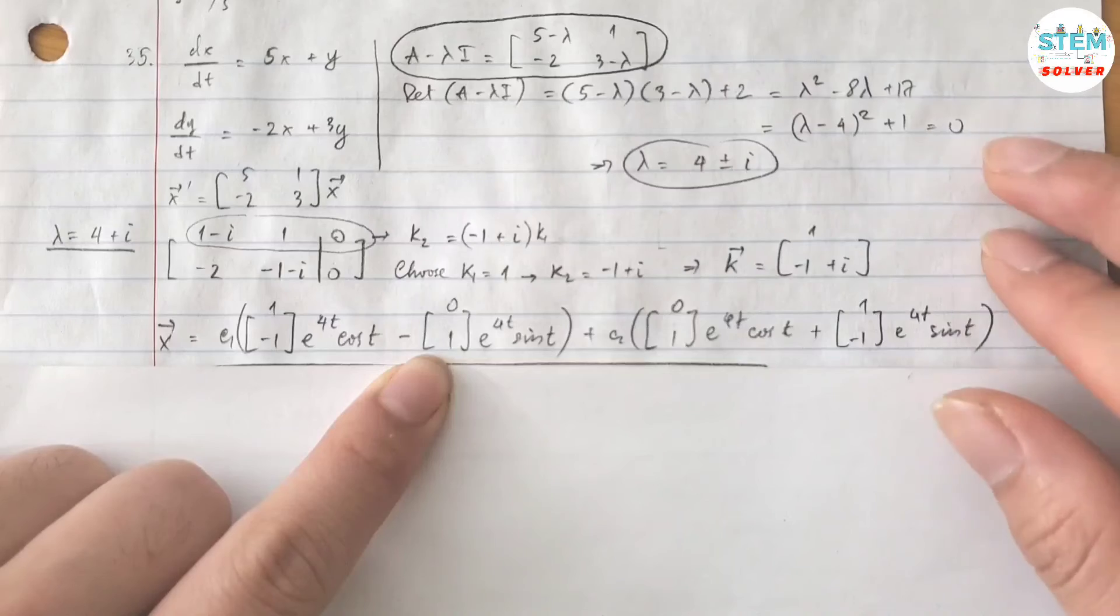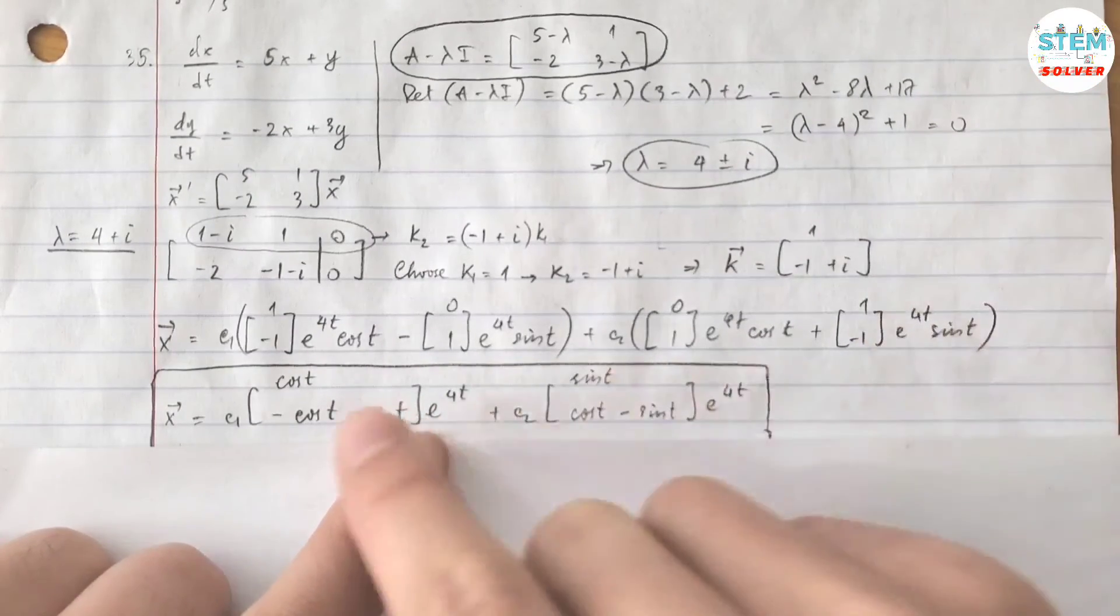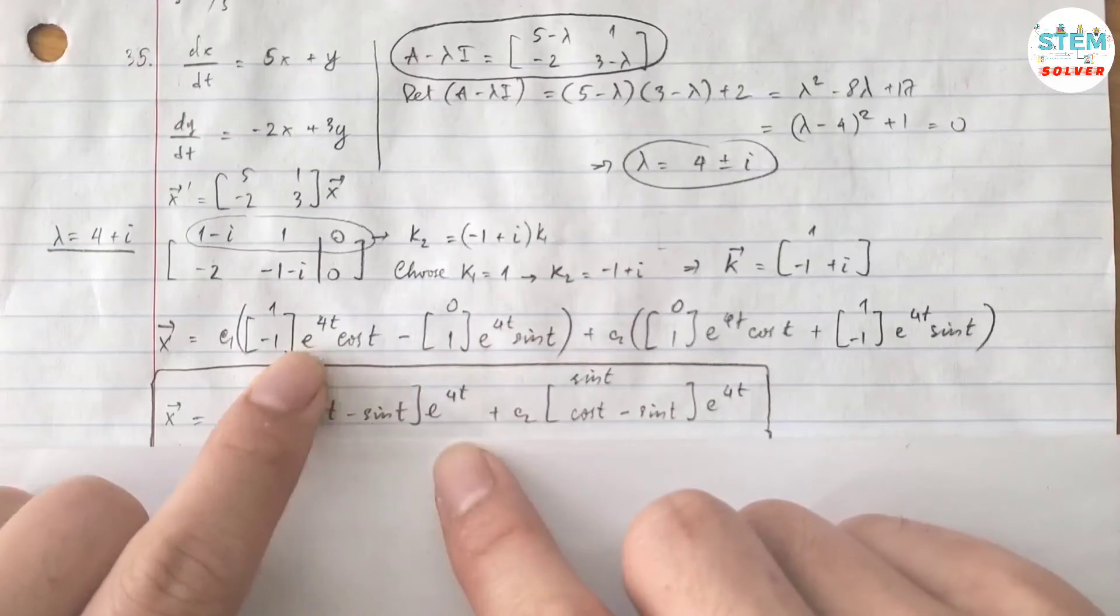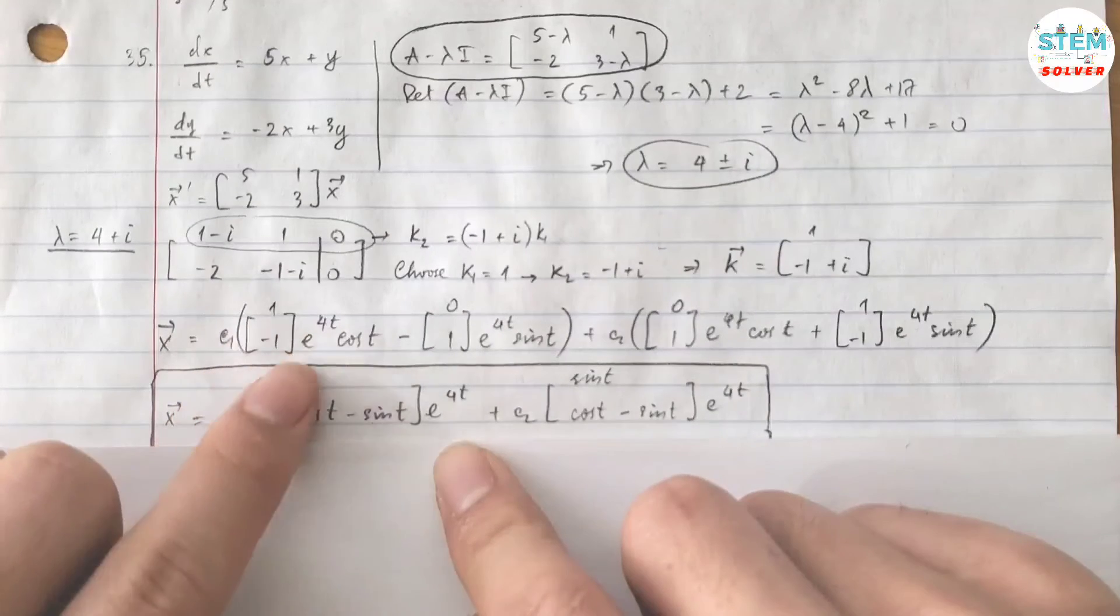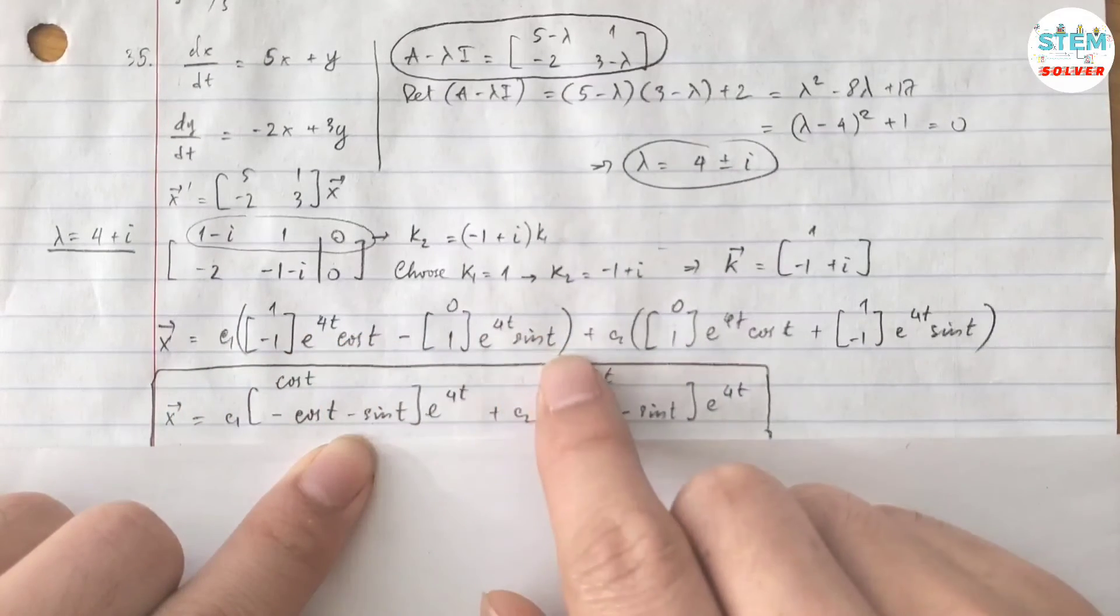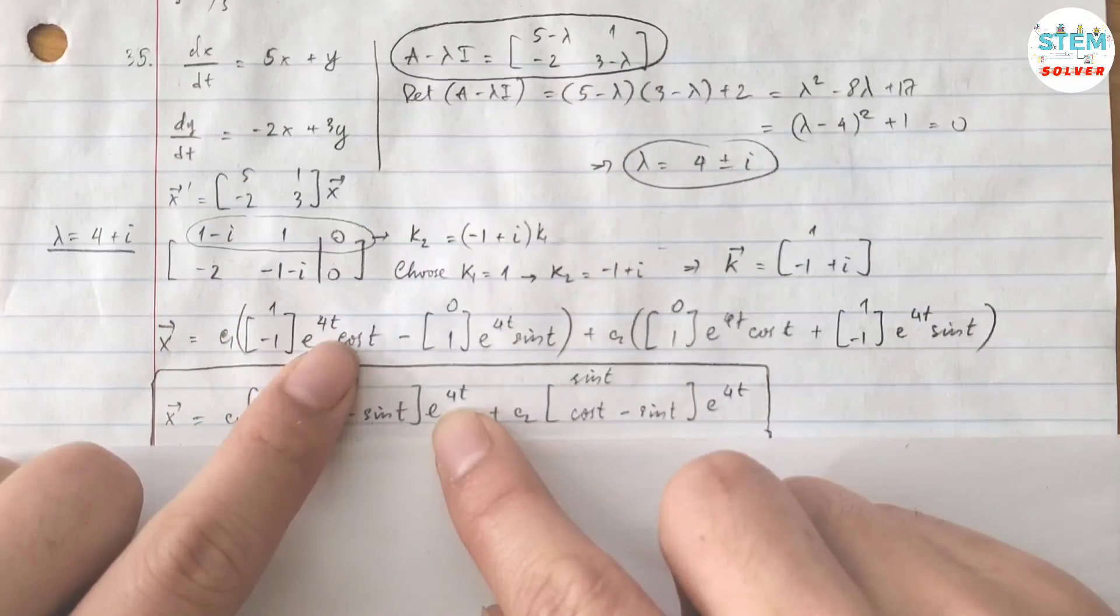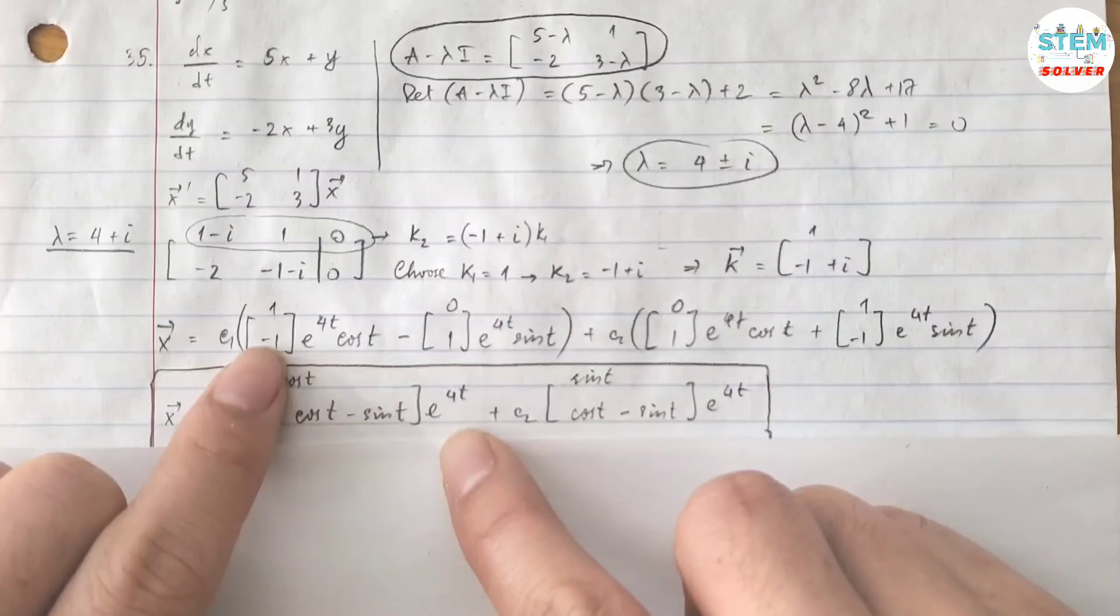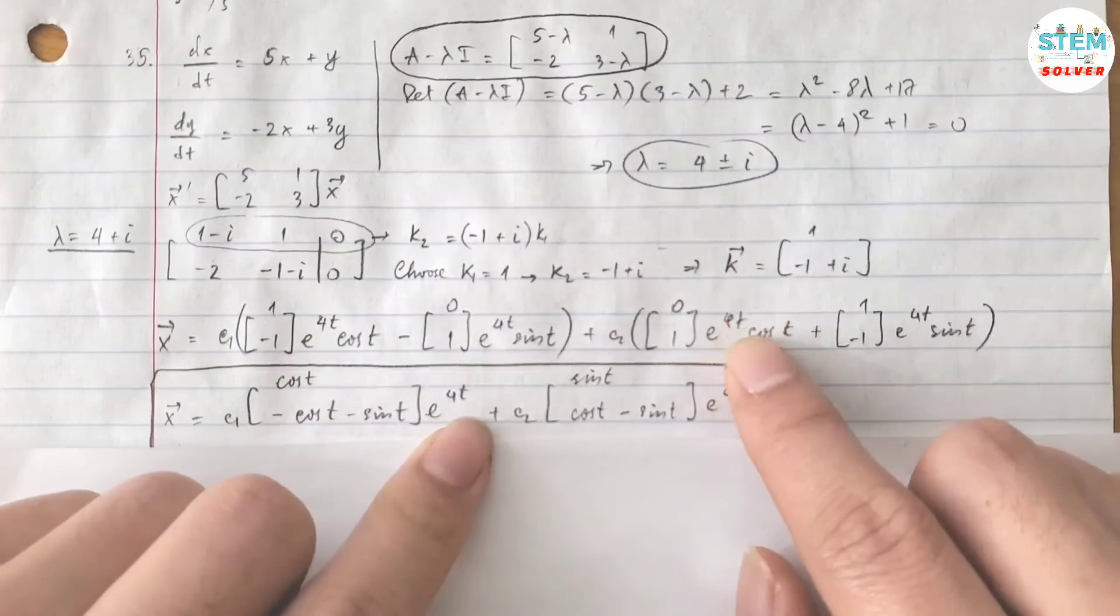You can stop at this step, but if you want to simplify down, you can do it by multiplying this out and combine them together. So let's see. So you have c1. If you multiply this, I factor out e to the 4t. So for this one I'm left with cos(t) minus 0 which is cos(t). Down here I have negative cos(t) minus sin(t). Similarly for this one you have...